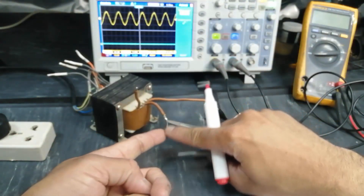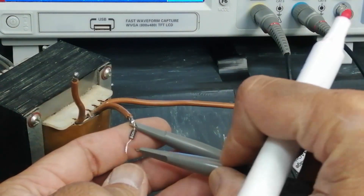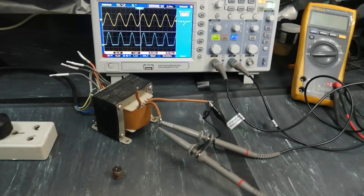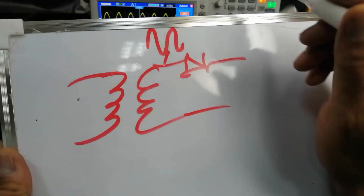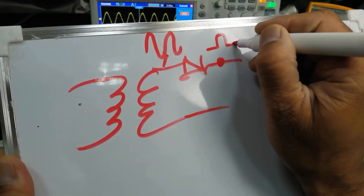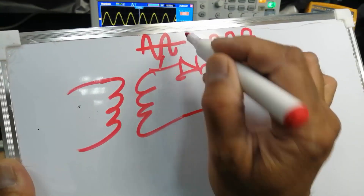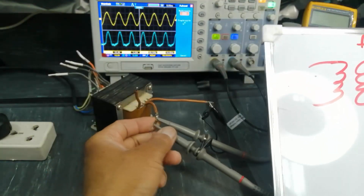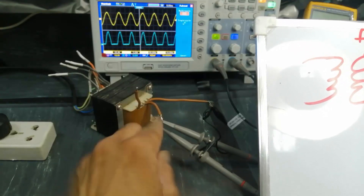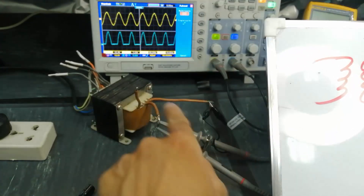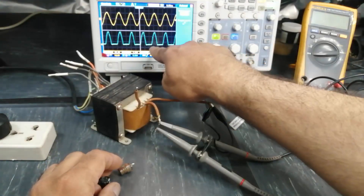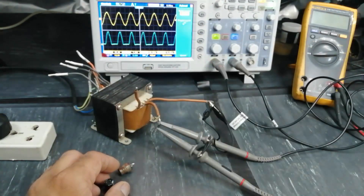Now I connected one diode. And I am going to connect the output of the diode to the scope. So we can see we have the negative peak clipped. Because the diode is a one-way conductor, it will remove the negative half-cycle or positive half-cycle depending upon the direction of the diode. This rectified output has pulses — up and down — it has no constant voltage level.